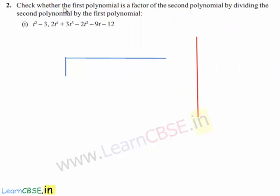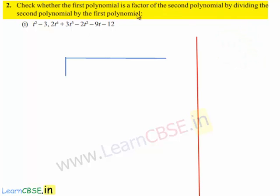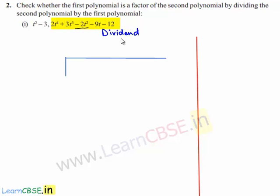Coming to the second problem: check whether the first polynomial is a factor of the second polynomial by dividing the second polynomial by the first polynomial. The second polynomial becomes the dividend and the first polynomial becomes the divisor. If we get remainder 0 on division of the second polynomial by the first polynomial, we say that the first polynomial is a factor of the second polynomial.